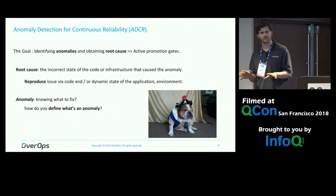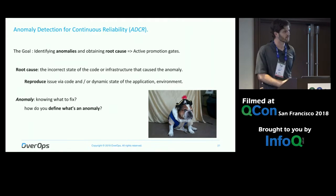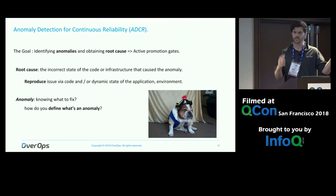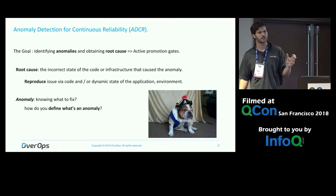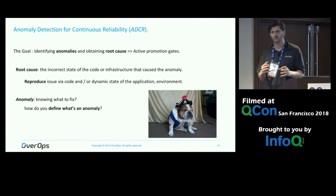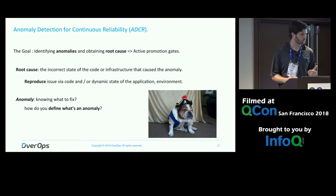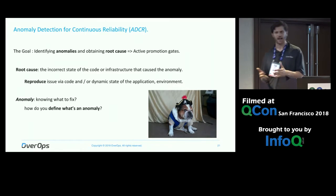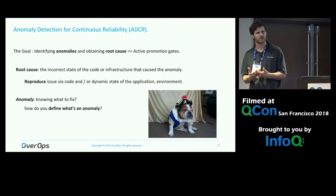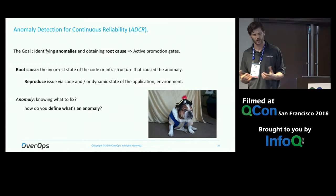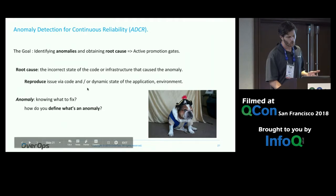I usually focus on root cause analysis talks, but I'm going to talk about anomaly detection this time. For root cause analysis, we as developers and DevOps just need to understand what was the code doing, exactly what information it was processing, what was the state of the environment. Until we're actually able to define anomaly in the context of continuous reliability, we can't leverage it, we can't have a promotion gate or automation to tell us if code is reliable.